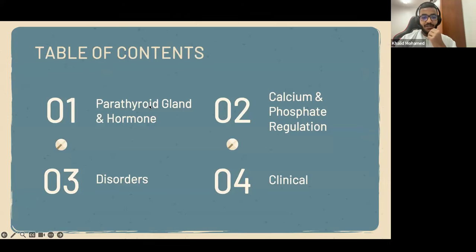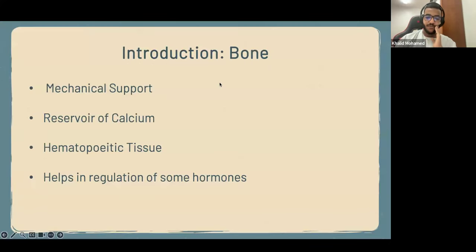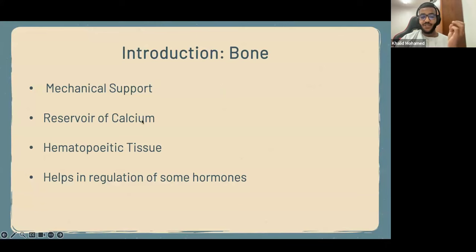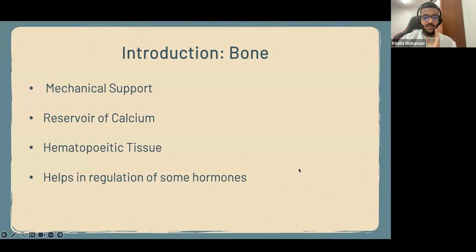In this lecture, we'll talk about the parathyroid gland and parathyroid hormone, calcium, phosphate, and their regulation. Then we'll talk about some diseases associated with bone and calcium, and finally the clinical aspect of this field. Before we start, we all know what bone is — it forms the mechanical support for our body. It's also the main reservoir for calcium: 99% of calcium in the body is stored in the bone.